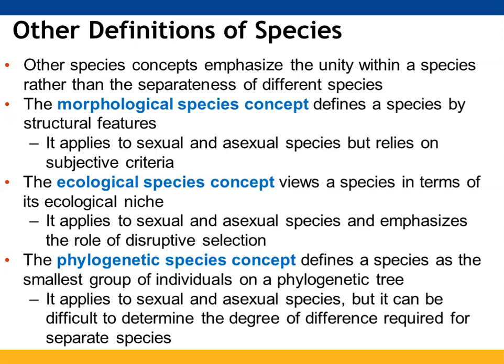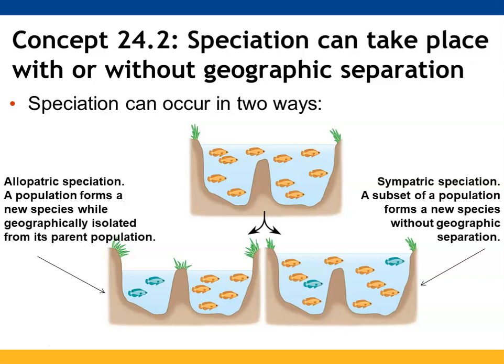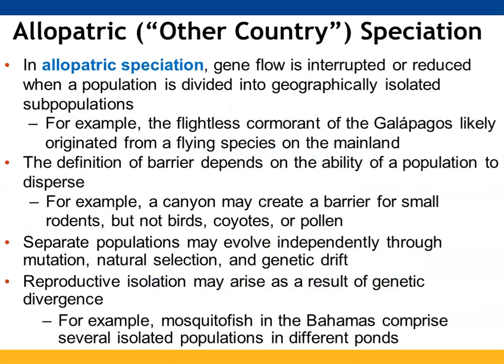Ways speciation can take place can involve geography, but it does not have to. Allopatric speciation is the formation of a new species from a population that gets geographically separated from its parent population. Sympatric speciation is when a subset of a population forms a new species while remaining with the parent species — no geographic separation is present. Focusing first on allopatric: gene flow becomes interrupted or reduced when a population is divided into separate geographically isolated subpopulations. This is thought to be how the flightless cormorant found on the Galapagos came to be.